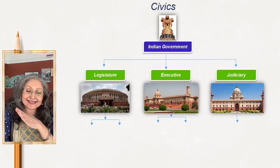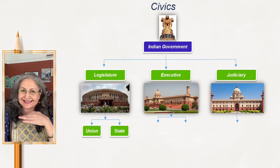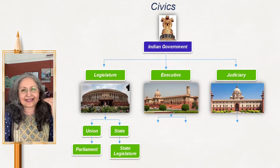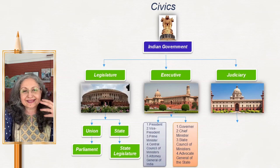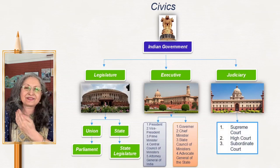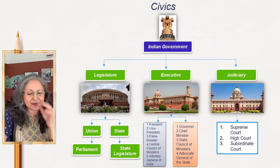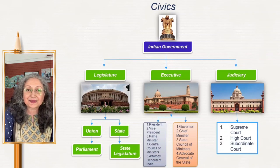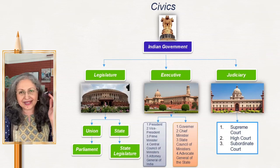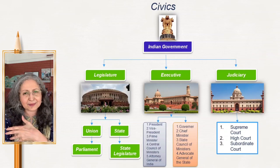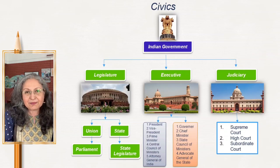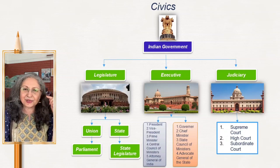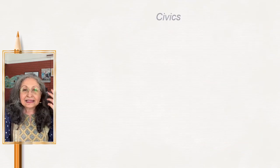It's important to know that the executive has the union and the state, and therefore the parliament and the state legislature. It continues with people holding the executive: the president, prime minister, and vice president where the union is concerned, and the governor, chief minister, and state council of ministers where the state is concerned. It's important to put this down pictorially and wherever possible also add the images. Of course, we also have the judiciary — the Supreme Court, High Court, and all the subordinate courts.